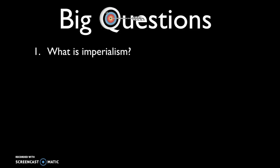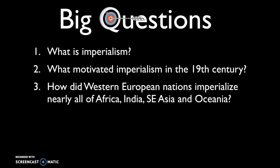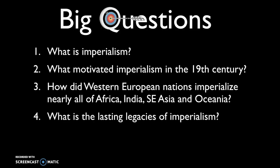The big questions you should be able to answer after watching the last video were: what is imperialism and what motivated imperialism in the 19th century? In this video, we'll be focusing on how did Western European nations come to imperialize nearly all of Africa, India, Southeast Asia, and Oceania? And then, what are the lasting legacies of imperialism?